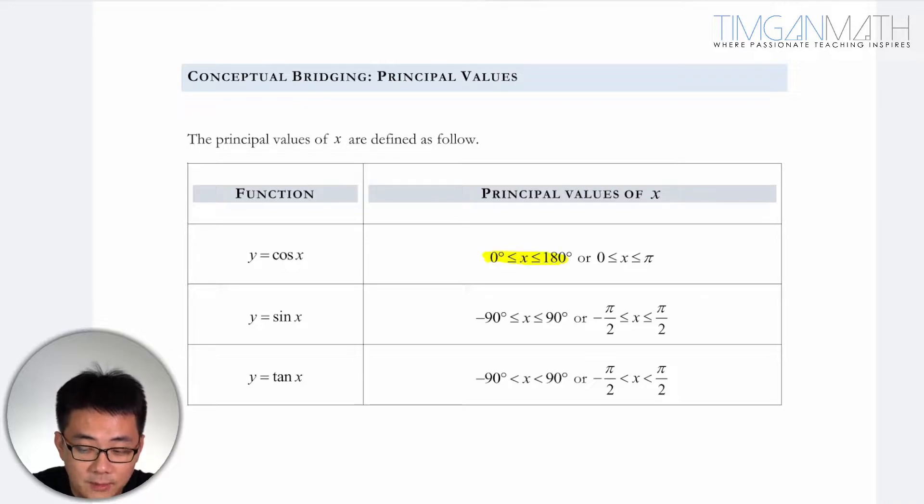So for cosine theta, it's 0 degrees to 180 degrees, and for sine theta it's negative 90 degrees to 90, and tangent is negative 90 to 90 as well.